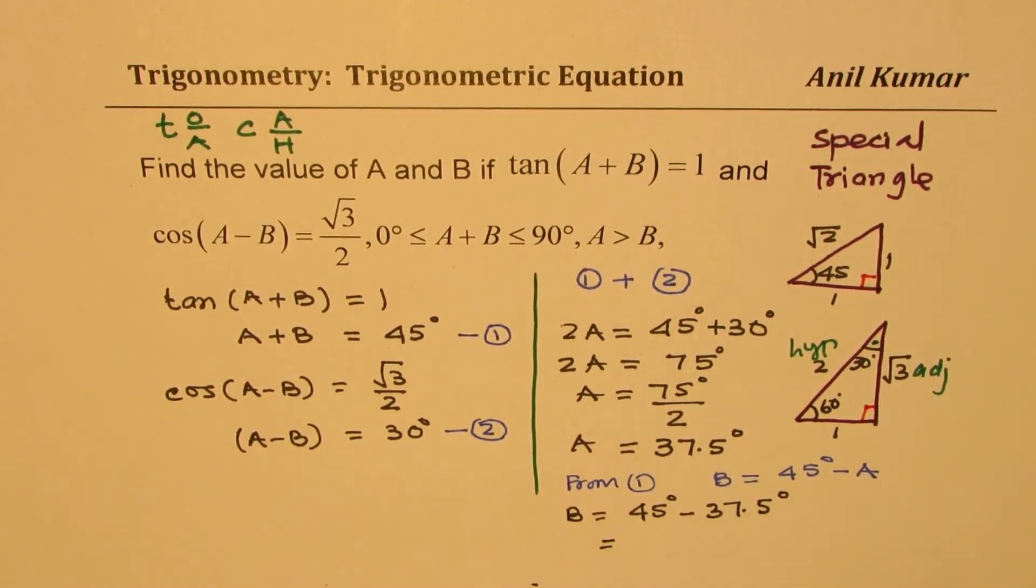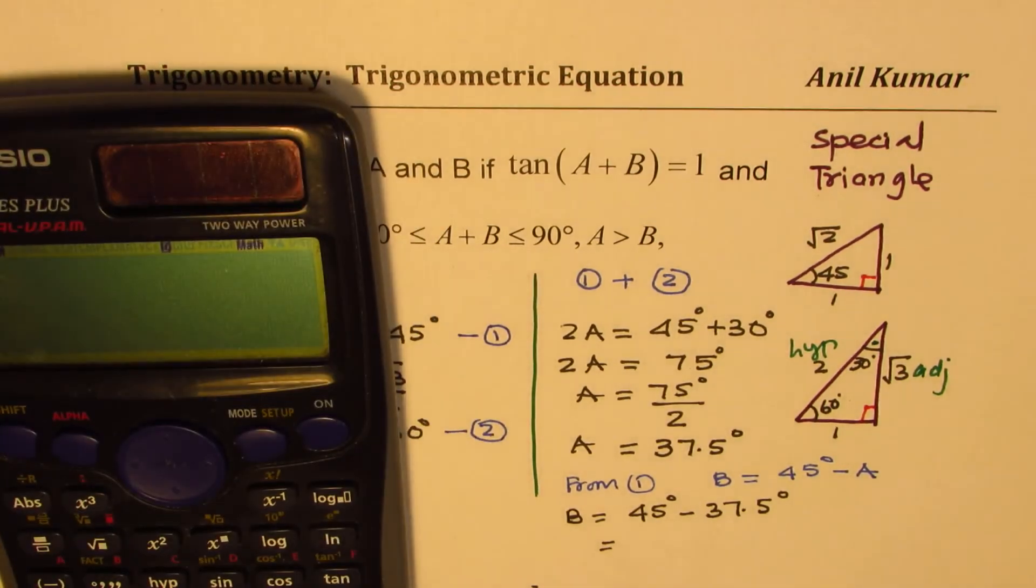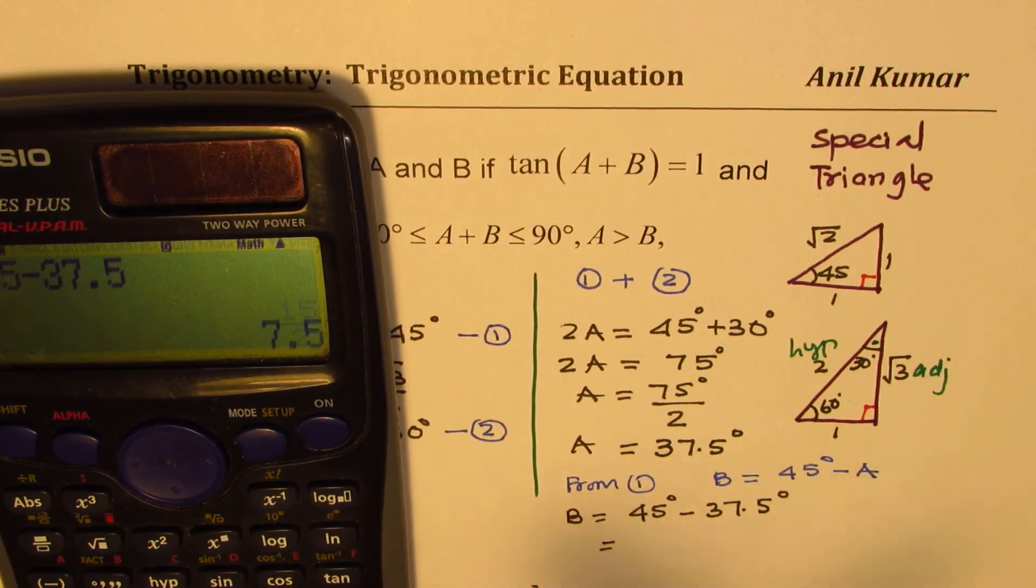You can use calculator if you want to. 45 minus 37.5 equals, in decimal, 7.5 degrees.